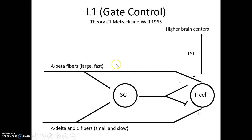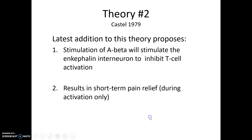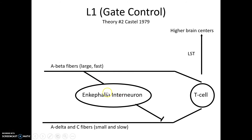Here we have the A-beta fibers, A-deltas, and C's. If I hit my head and then rub that place, the pain decreases due to the override of the A-beta fiber getting to the T cell faster than the C fiber pain signal. The T cell is able to transmit that A-beta sensory input faster than the pain signal. Additionally, the enkephalin interneuron can be stimulated by the A-beta nerve fiber, causing a release of enkephalin which overrides the C fiber pain signal and sends that information through the T cell so the pain is not experienced.